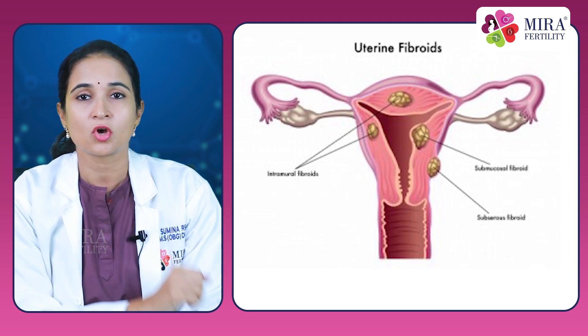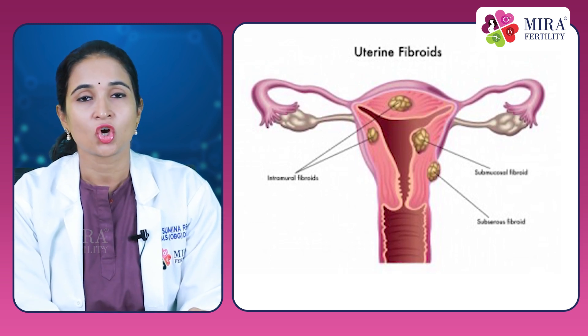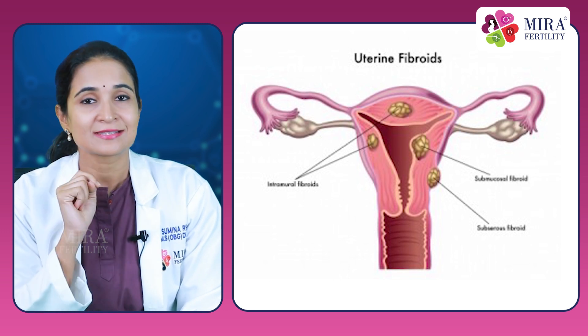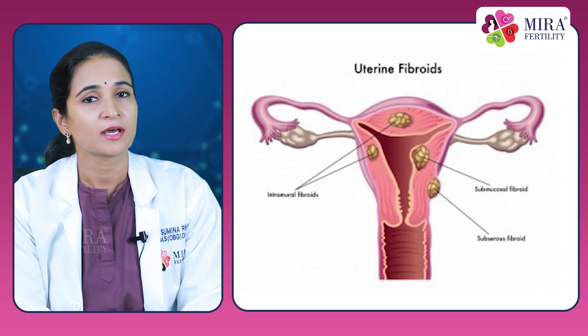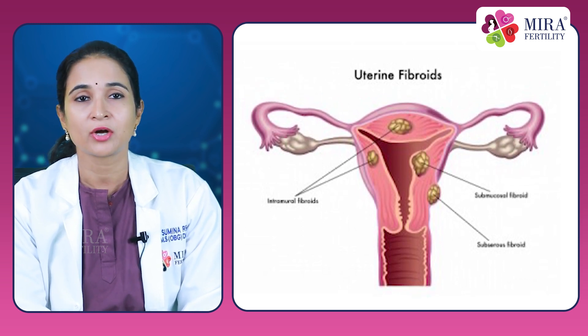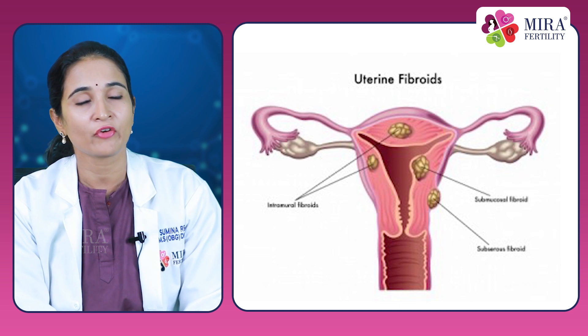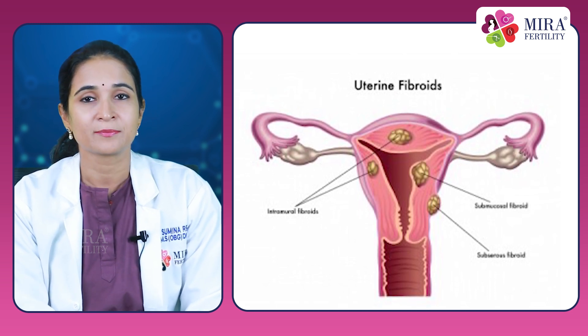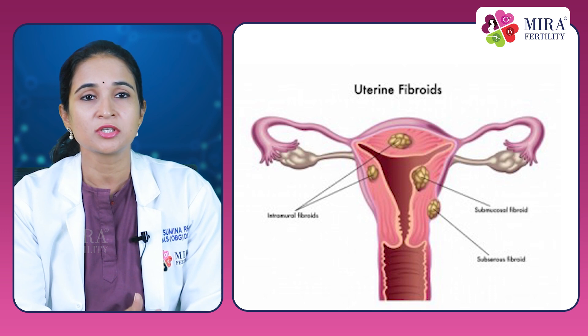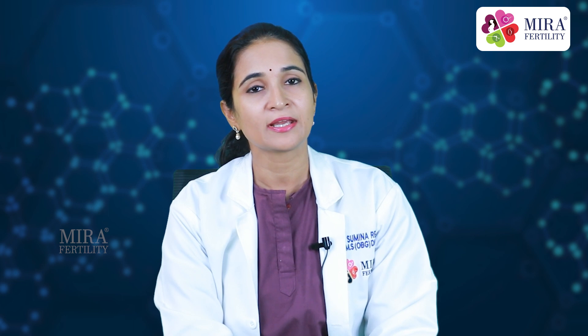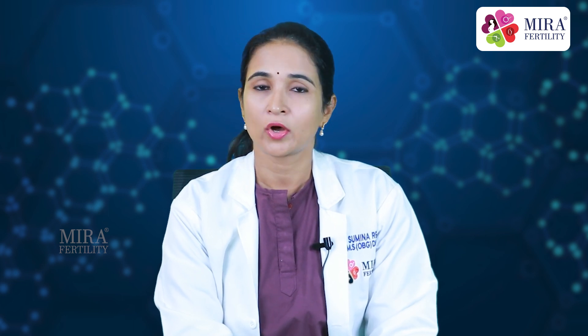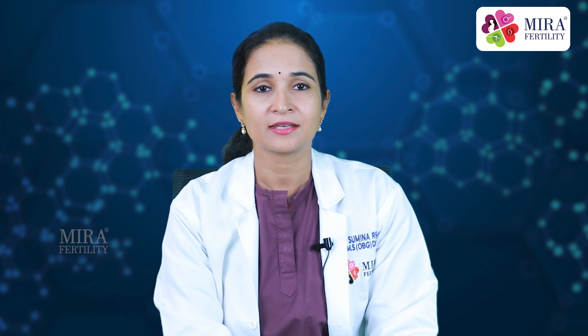There are three main types of fibroids based on where they are found. First, subserosal fibroids are found on the outer wall of the uterus and are more common. Intramural fibroids are found in the muscle layer of the uterus, and submucosal fibroids protrude into the uterine cavity. Fibroids can also be connected to the uterus by a stalk, called pedunculated fibroids, or attached to nearby ligaments or organs such as the bladder and bowel.